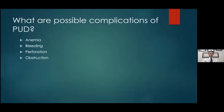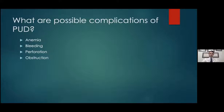Complications of ulcers include anemia and bleeding — dark tarry stools or vomiting blood are common presentations. More concerning problems include perforation, which is a hole in the GI tract lining requiring surgery, and obstruction or blockage. Ulcers toward the bottom of the stomach near the small intestine can cause swelling that blocks the stomach outlet, which could require hospitalization and potentially surgery.